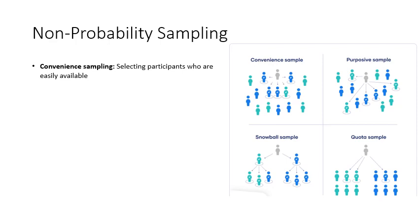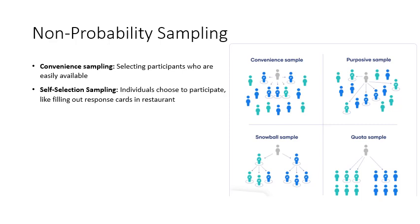Only the people near or convenient to the researcher are chosen, so the sample isn't representing the population. Another type is self-selection sampling — whoever chooses to participate, participates. Picture a restaurant with a response card on the table asking how satisfied you were with your experience today, and think about who is likely to self-select into that survey.